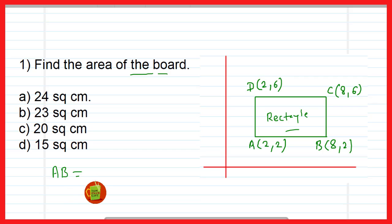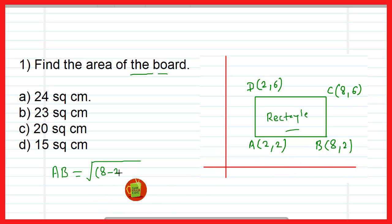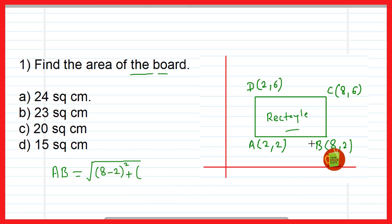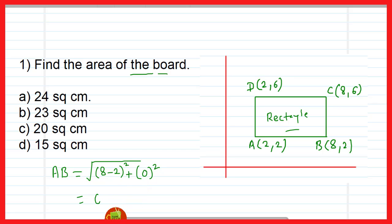To find the AB distance we will use the distance formula: √((x₂ − x₁)² + (y₂ − y₁)²), that is √((8 − 2)² + (2 − 2)²). So here 8 minus 2 equals 6, 6 squared is 36, and the square root of 36 is 6. Therefore the AB distance is 6 centimeters.